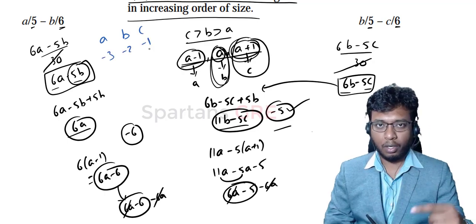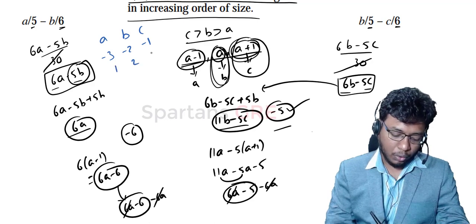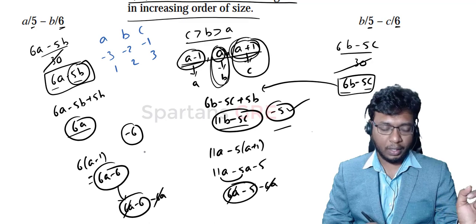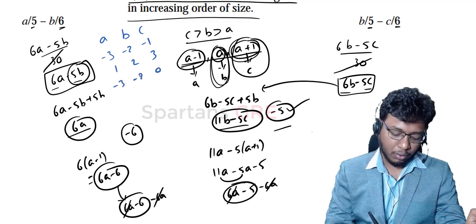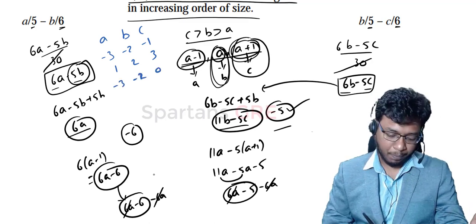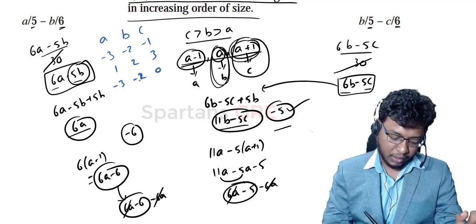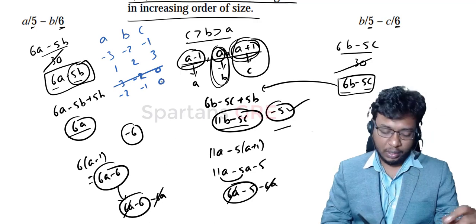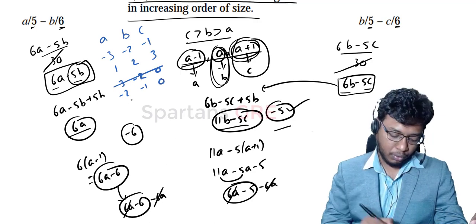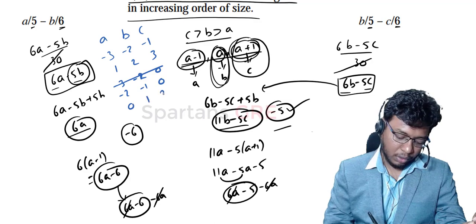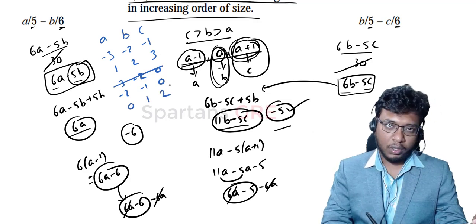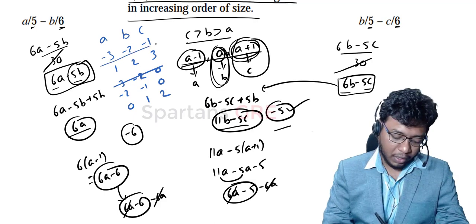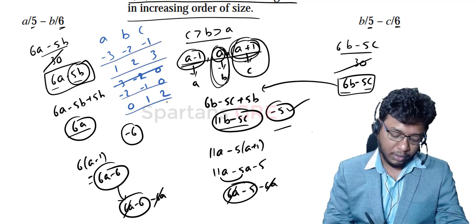You'd also need to include zero with negatives — for example, −2, −1, 0 — and zero with positives — for example, 0, 1, 2. These are all edge cases. In the traditional way, you'd need to plug in four different value sets into the variables, which is very time consuming.